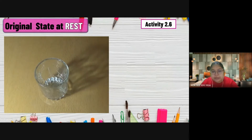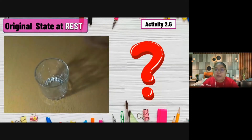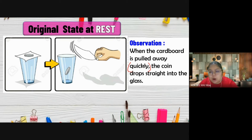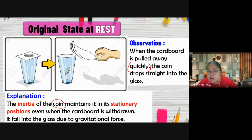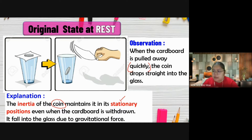The coin drops into the glass. Observation: when the cardboard is pulled away quickly, the coin drops straight into the glass. Explanation: the inertia of the coin causes it to maintain its stationary position - not the cardboard, which you control. The inertia of the coin makes it want to maintain its original stationary position even when the cardboard is withdrawn. Finally it drops into the glass because it is pulled by gravitational force.